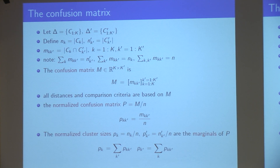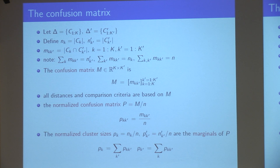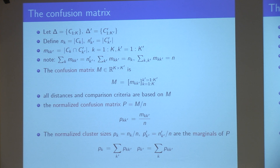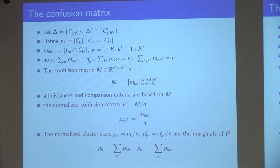No matter what distance we use, we start from the same sufficient statistics from the data, which is the confusion matrix. I have two clusterings — they don't necessarily have to have the same number of clusters. n_k will be the number of points in each cluster, and m_{kk'} is the cardinality of the intersection between cluster k in the first clustering and cluster k' in the second clustering.